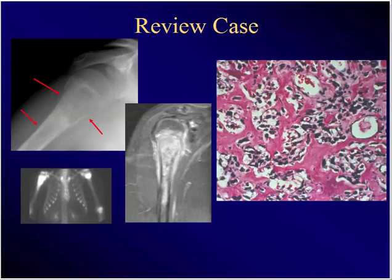Proximal humeral lesion, 18-year-old, hot on bone scan, night pain, pain with shoulder motion. This histopath — what's the diagnosis? Osteosarcoma.